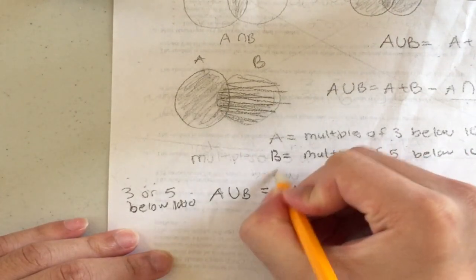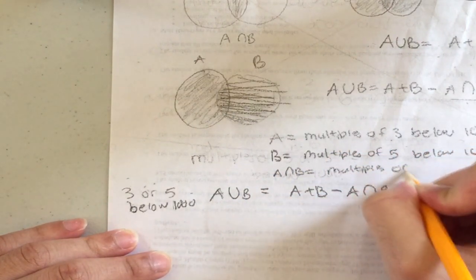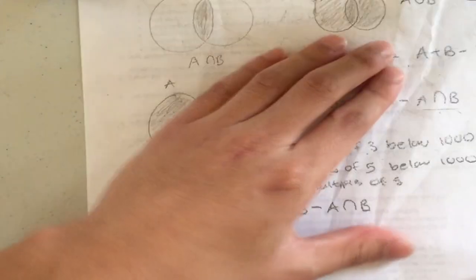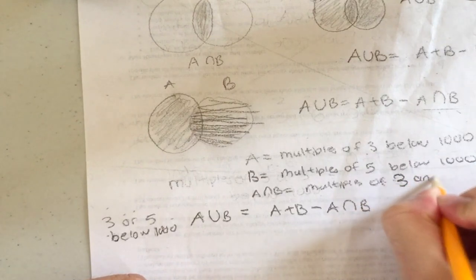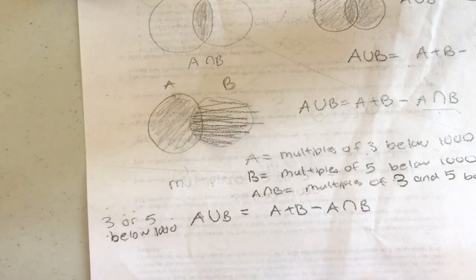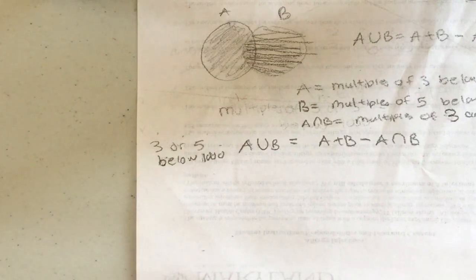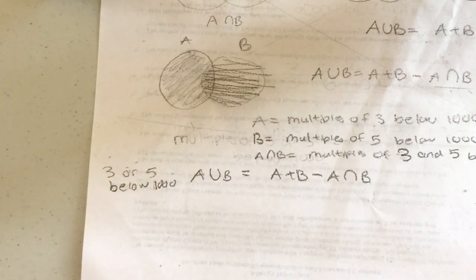A intersection B is the multiples of both three and five below 1000. So we have to add the multiples of three below 1000, plus the multiples of five below 1000, then subtract the multiples of both three and five below 1000.